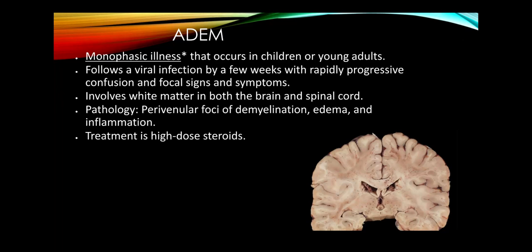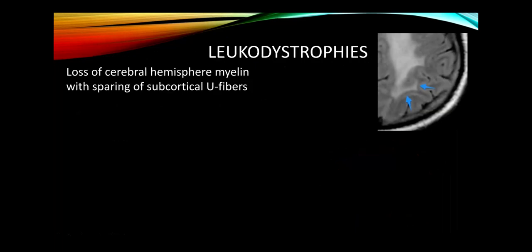Acute disseminated encephalomyelitis (ADEM) is a once-in-a-lifetime syndrome — usually in younger individuals after a viral infection — with profound involvement of myelinated pathways. Pathology shows perivenular demyelination, edema, and inflammation. Treatment is high-dose steroids; if patients survive the acute phase, they can have good recovery.